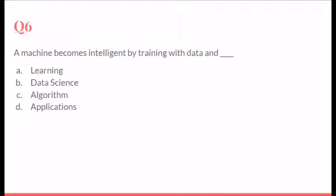The next question in the same row: A machine becomes intelligent by training with the data and the machine takes data and algorithm, that is the procedure.